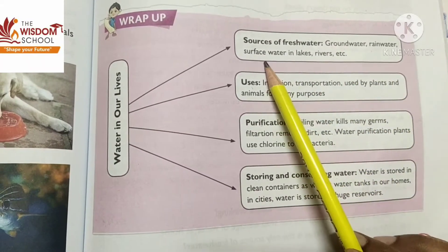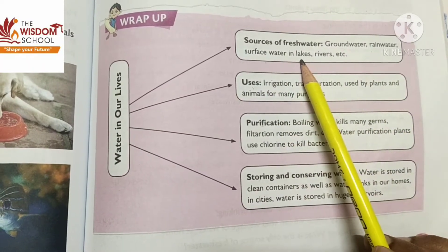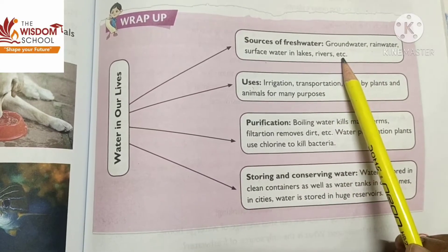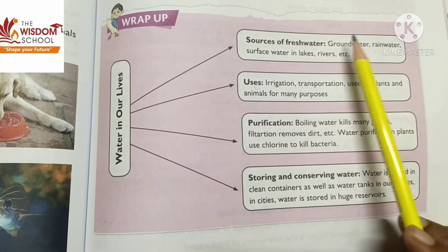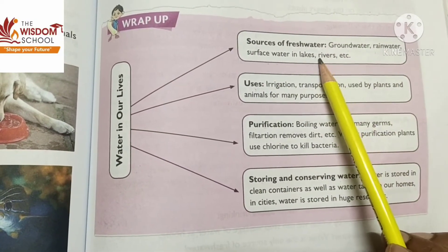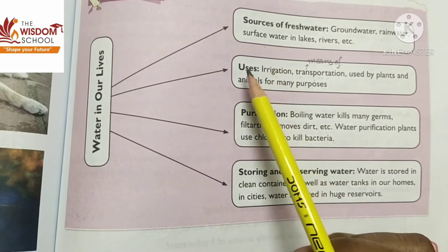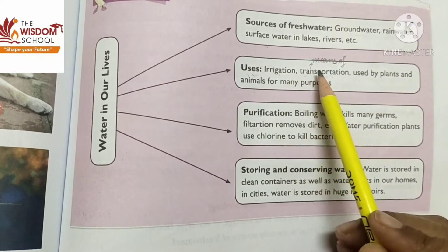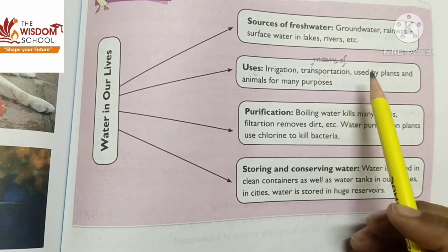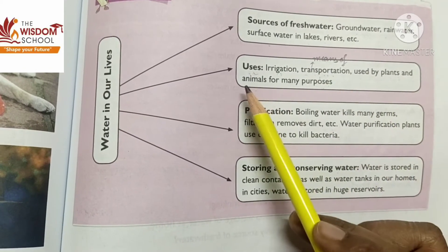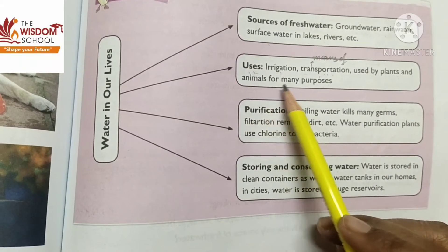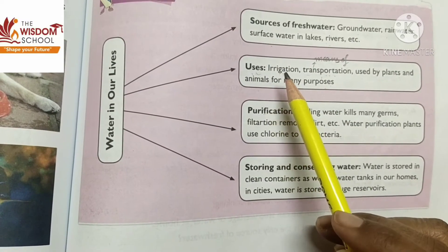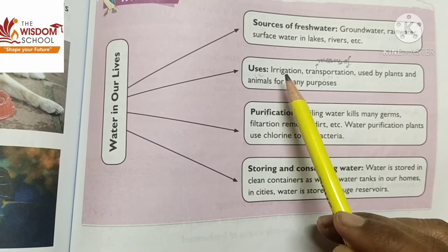surface water in lakes, rivers, ponds, etc. Ye sabhi kya hai — sources of fresh water. Uses of water: it is used for irrigation, transportation, used by plants and animals for many purposes.